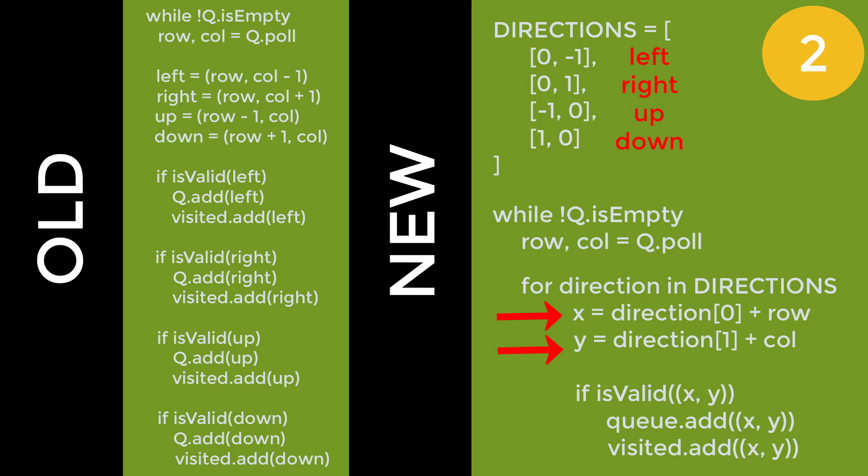So now with this new x and y value that we've just calculated, we can then just check if that x and y coordinate is valid. If it is, then that means we can add it inside of our queue and add it inside of our visited set. So as you can see, the new way will allow you to reduce the amount of code that you have to write. And it's going to simplify the logic for you when you're implementing your breath first search solution.